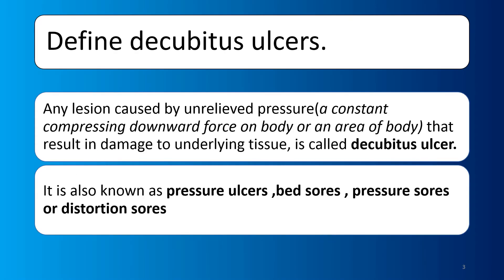Define decubitus ulcers. A lesion caused by unrelieved pressure — that is a constant compressing downward force on the body or an area of the body — that results in damage to underlying tissue is called a decubitus ulcer. It is also known as pressure ulcers, bed sores, or pressure sores.